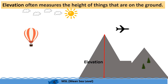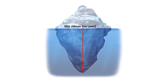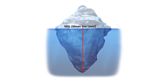Elevation is measured above or below a reference point, which is commonly sea level. The sea level is constantly fluctuating and can vary at different points of the world. Elevation below sea level refers to locations on the earth's surface that are situated at a height lower than the average sea level, and these points have negative elevations.